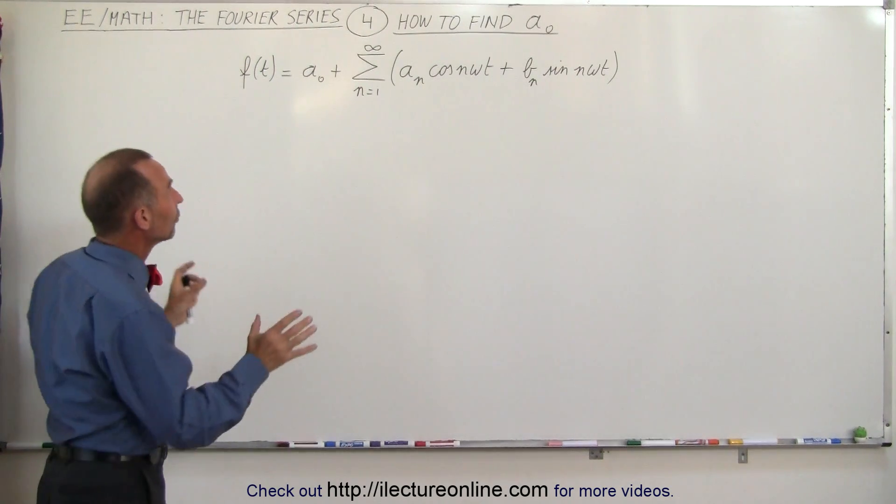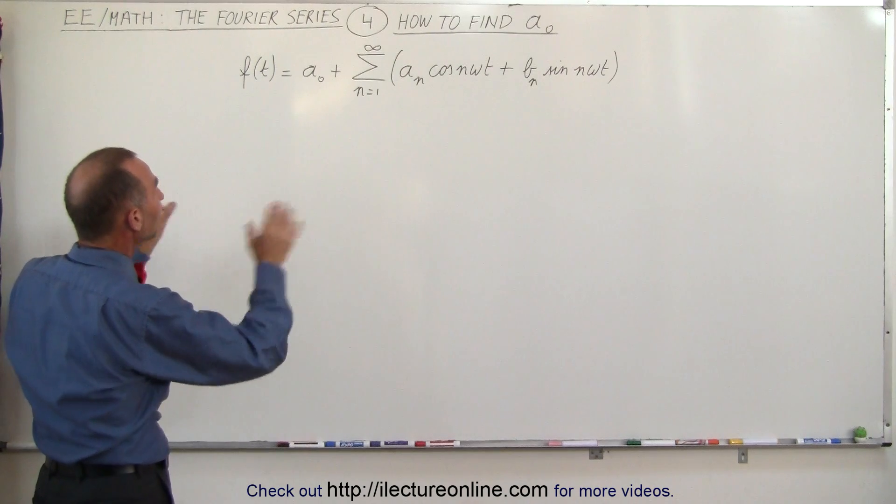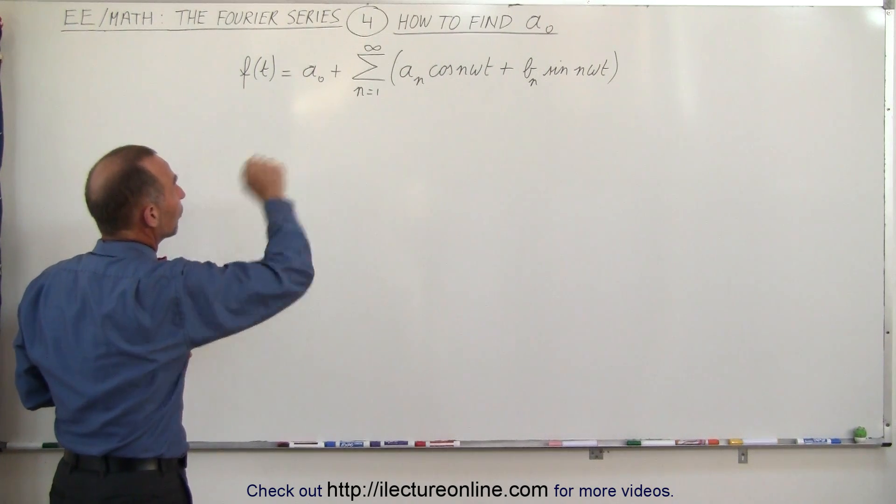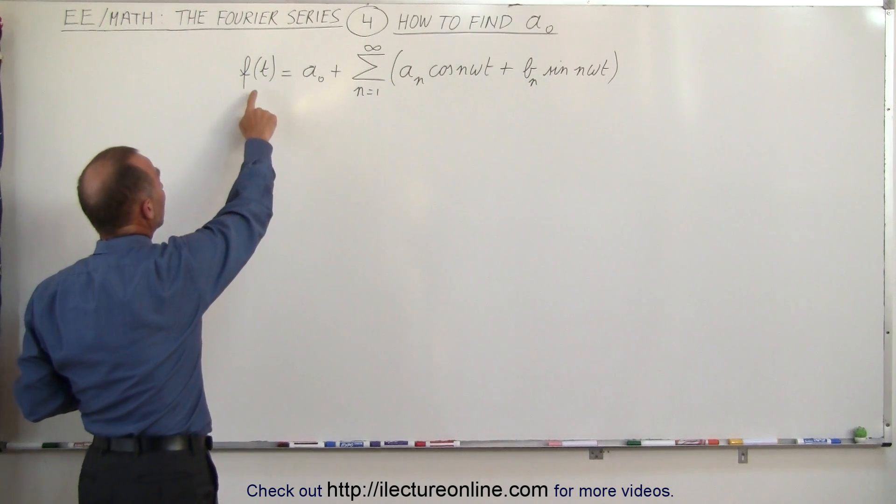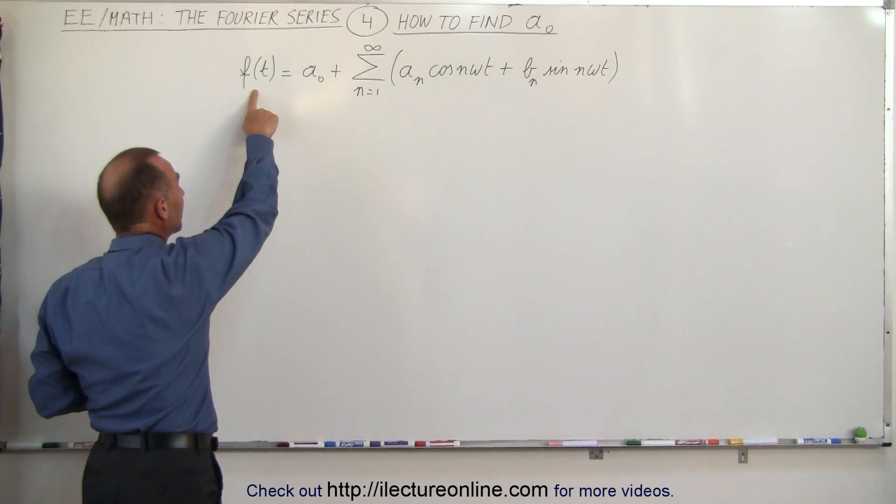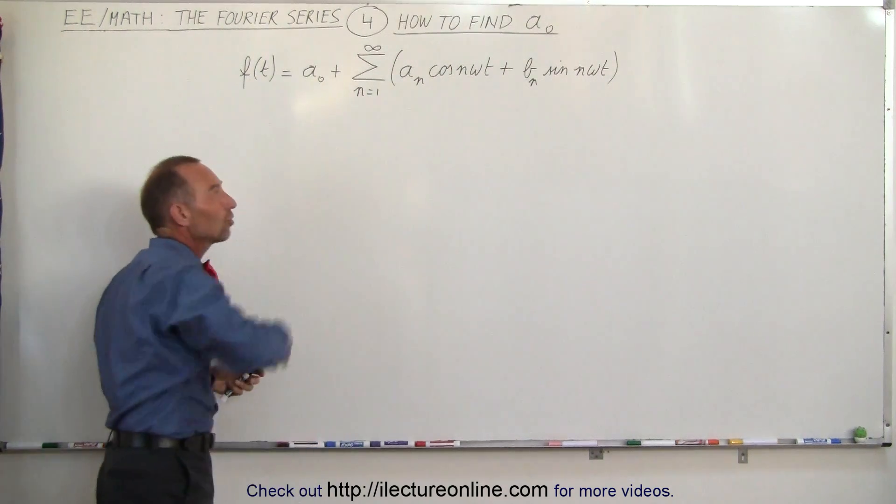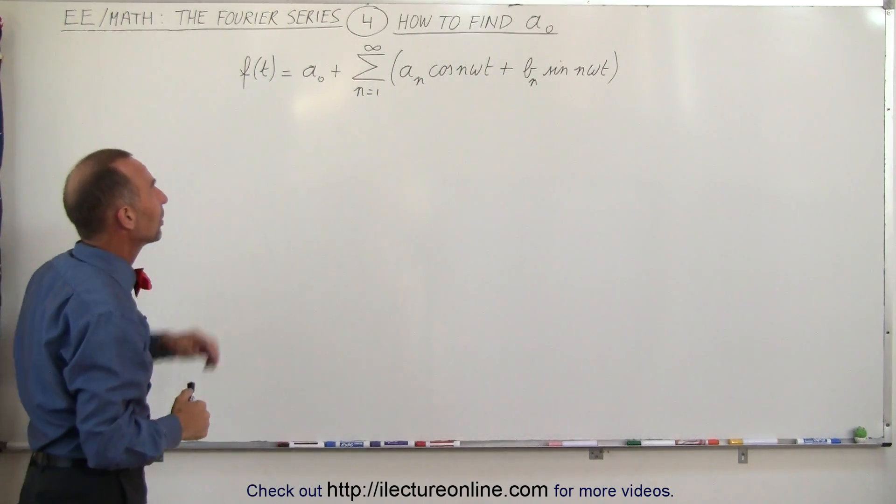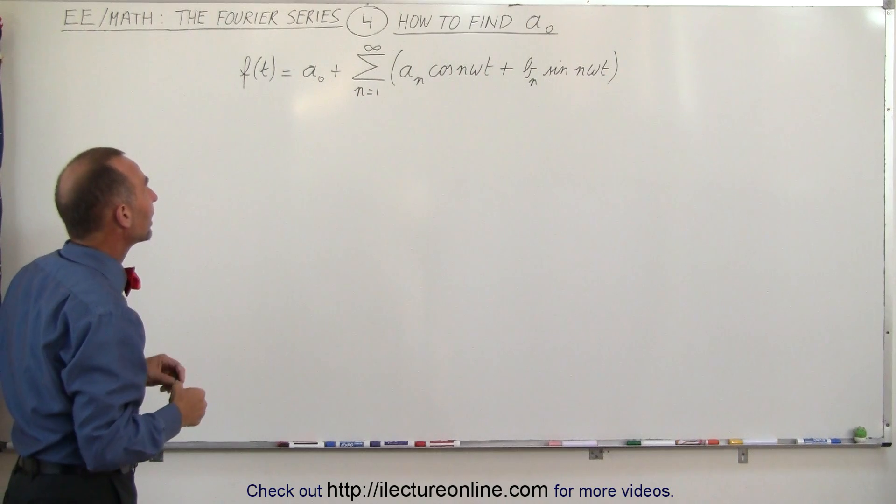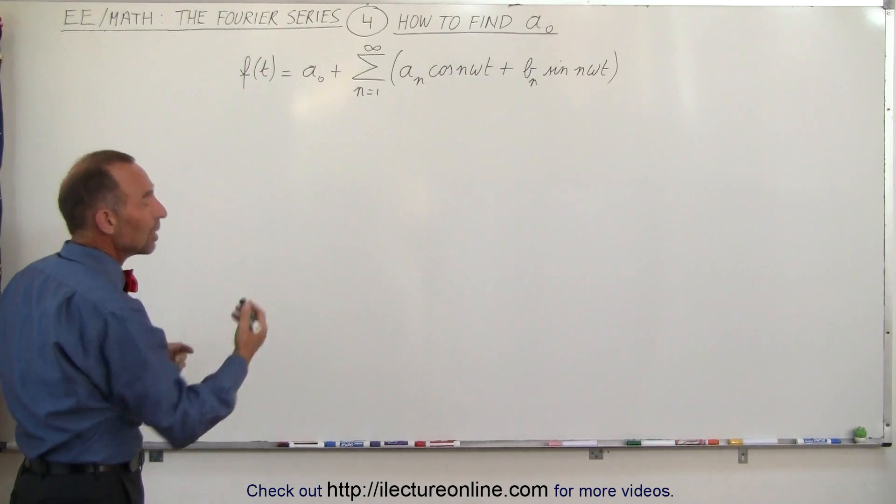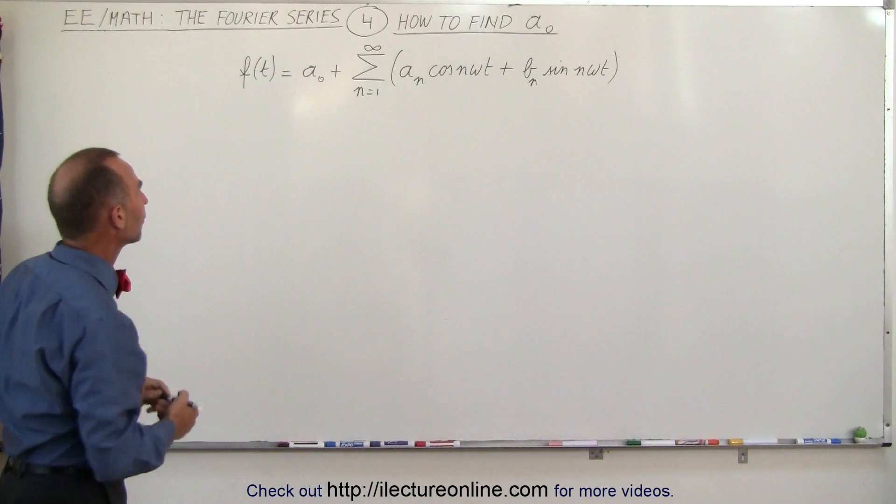To do that, we're going to integrate both sides of this equation. Remember that this is a general form of the Fourier series, that any periodic function f of t can be written as an infinite sum of cosines and sines in this particular fashion.